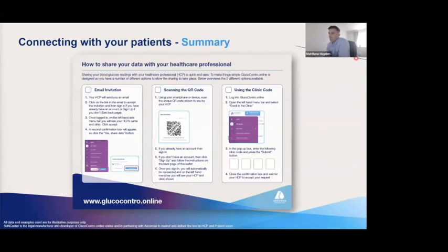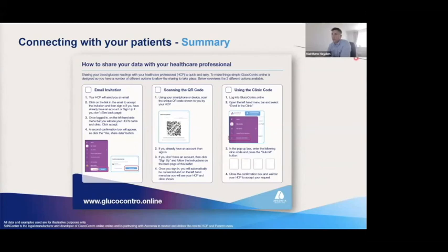On screen here is material that Ascensia provides to healthcare professionals using GlucoContro Online to give to their patients. There are four options for patients to connect with your clinic. For the first option — plugging the meter in when the patient comes to clinic — you would not need to give the patient additional instructions. However, for the other three options — email invitation, QR code invitation, or the unique four-digit clinic code — Ascensia has patient-friendly step-by-step instructions that you can tick the relevant method on and give to your patient so they are clear on how to join your clinic.